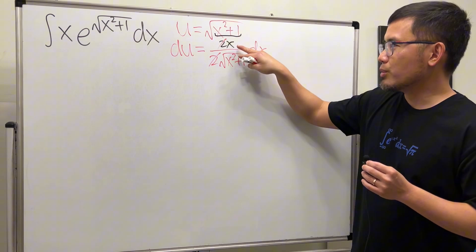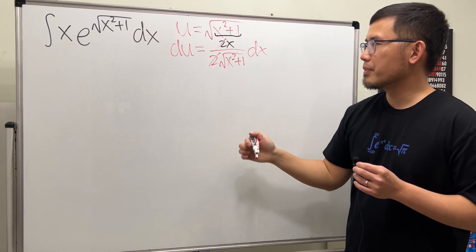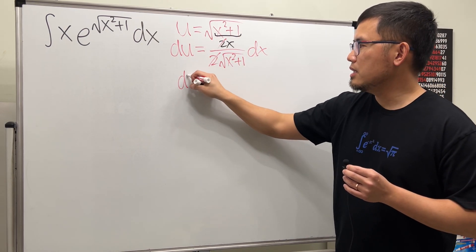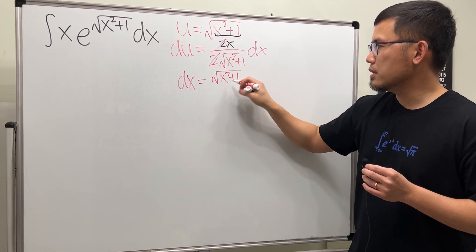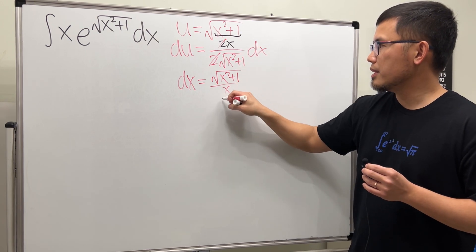And as you can see, the 2 and 2 cancel, it's a nice touch. And then to get the dx by itself, let's multiply the reciprocal on both sides, so we get dx equal to this on the top, so square root of x squared plus 1 over x on the bottom, and then we have the du.